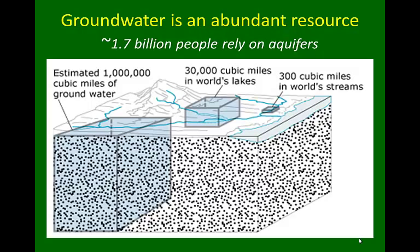One advantage to groundwater resources is that they're relatively still or moving very slowly compared to the world's streams, which can of course go through floods and droughts, rapidly changing the amount of water at any one place at any one time.